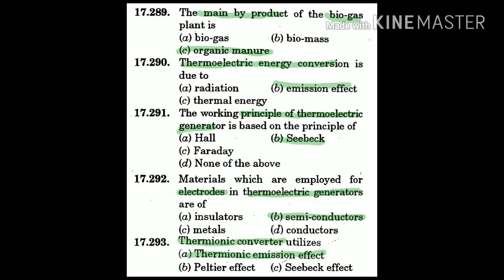Question 289: The main by-product of a biogas plant is — the answer is C: organic manure.